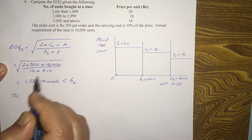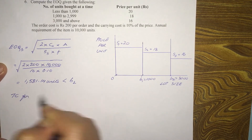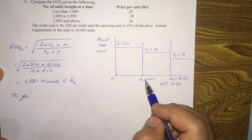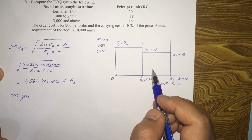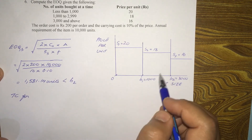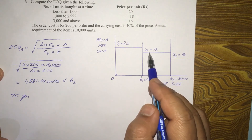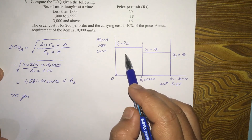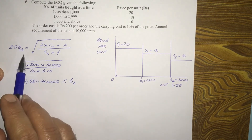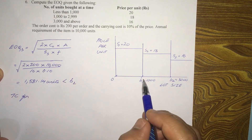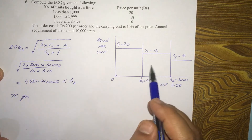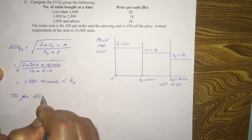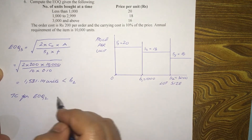Since EOQ3 falls between B1 and B2, the applicable price range is S2. We need to find the total cost for EOQ2 with price S2. We do not need to evaluate EOQ1 with price S1, because the EOQ3 result places us in the S2 price range.